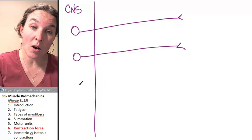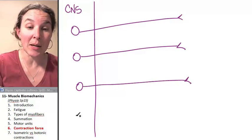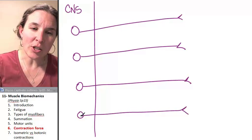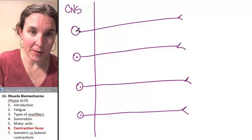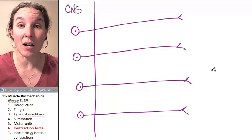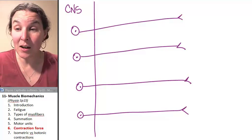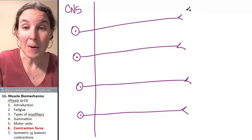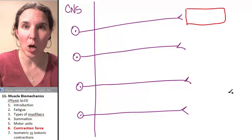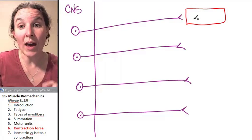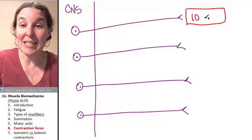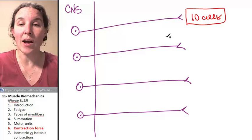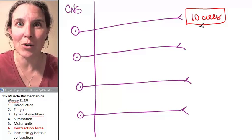I'm going to draw you four somatic motor neurons coming out of the central nervous system. And I'm not going to actually draw all of my myofibers, but each one of these neurons is in charge of a team of myofibers, skeletal muscle cells. So I'm going to represent all of them with this box, and this one has let's just say 10 cells. So 10 myofibers are in this particular motor unit.